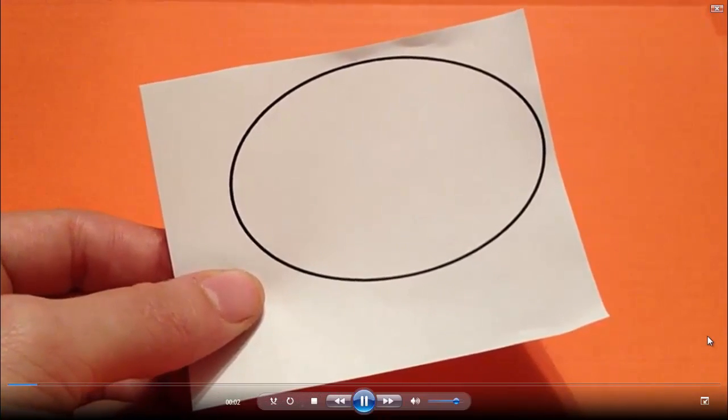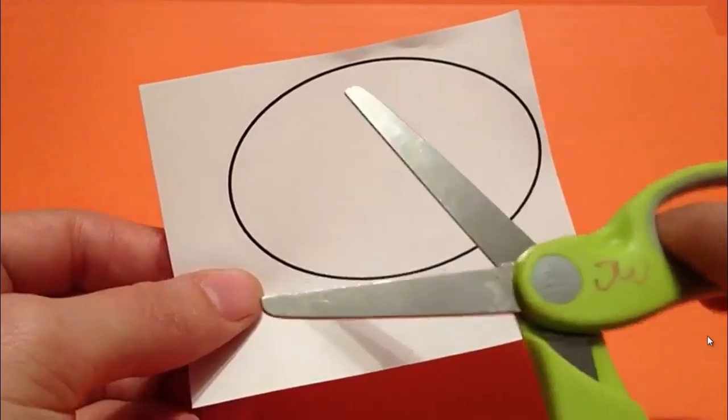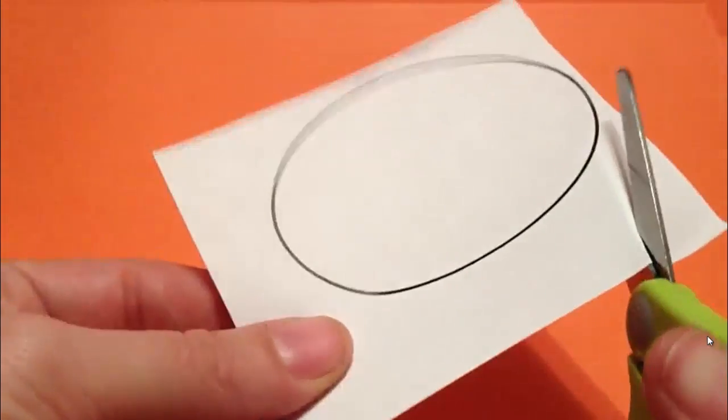All of you have in front of you one of these lovely little ovals. So we're going to take our paper scissors and carefully cut them out.